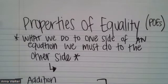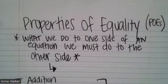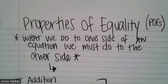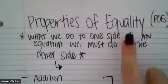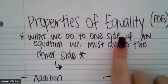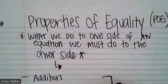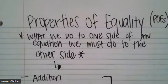Just like how we have other properties that allow us to do certain things — for example, the commutative property of equality says that we can add or multiply numbers in any order. So one plus three is the same as three plus one, or three times one is the same as one times three. Those are called the commutative properties. We also have something called the properties of equality, and basically what this states is: what we do to one side of an equation, we must do to the other side.